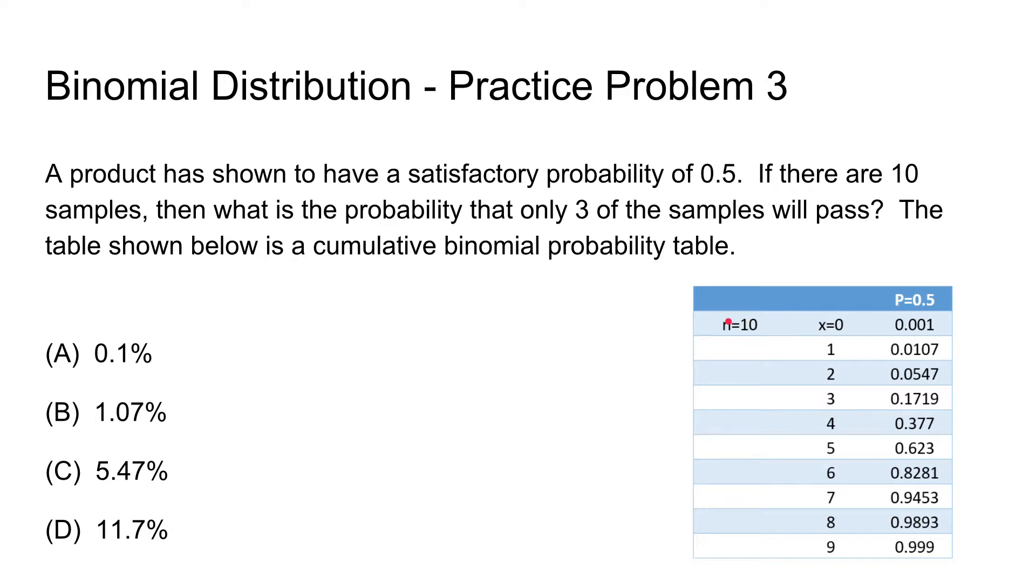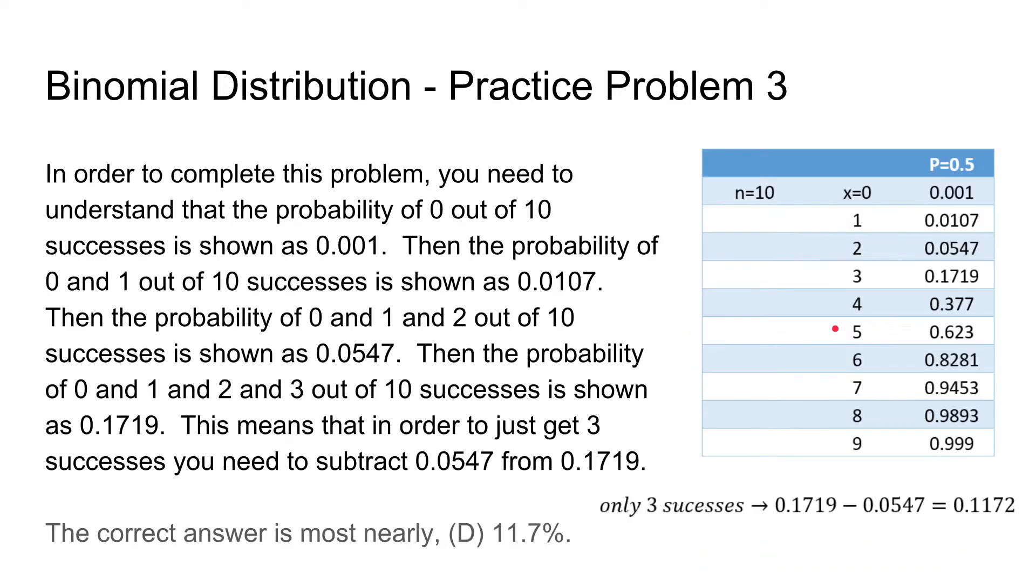X is going to be the number of successes when we take each of those samples. So for example, if we want to have 0 successes out of 10, we can find out what is the probability of that occurring. And this is shown as 0.001.